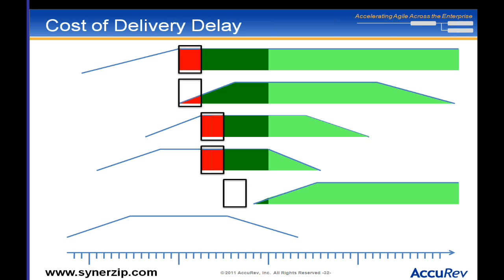If instead I could do something incremental — deliver the top two features quickly, the next two a little after that — I'm going to get all of the dark green revenue, and I'm going to get more of that revenue earlier. I can also use that to make decisions: that thing at the bottom — why even bother? By the time I get it done, its value is going to be pretty much gone.